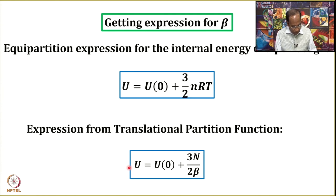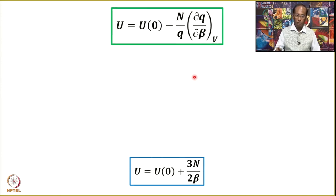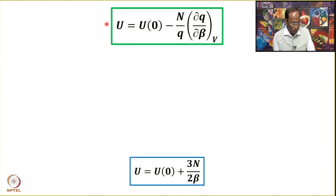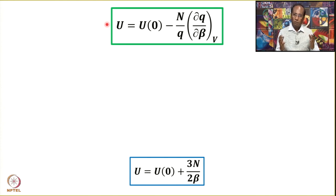Once we have derived this, we will compare these two expressions and equate 3n over 2β with 3/2 nRT to obtain an expression for β. We have already talked about internal energy: u is equal to u₀ minus n over q times del q by del β at constant volume. We are talking about the translational contribution.